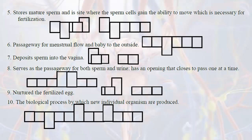6. Passageway for menstrual flow and baby to the outside. 7. Deposits sperm into the vagina. 8. Serves as the passageway for both sperm and urine. Has an opening that closes to pass one at a time. 9. Nurtured the fertilized egg. 10. The biological process by which new individual organisms are produced.